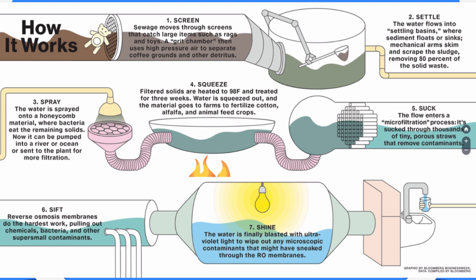After step two comes the spray-down step. The water is removed from the basins and sprayed into a honeycomb material where the bacteria that remain eat the solid stuff that's left behind. From here, the water can be pumped back into our rivers and oceans because it's clean enough, or it can be sent to a plant for more filtration to make it even more useful for drinking.